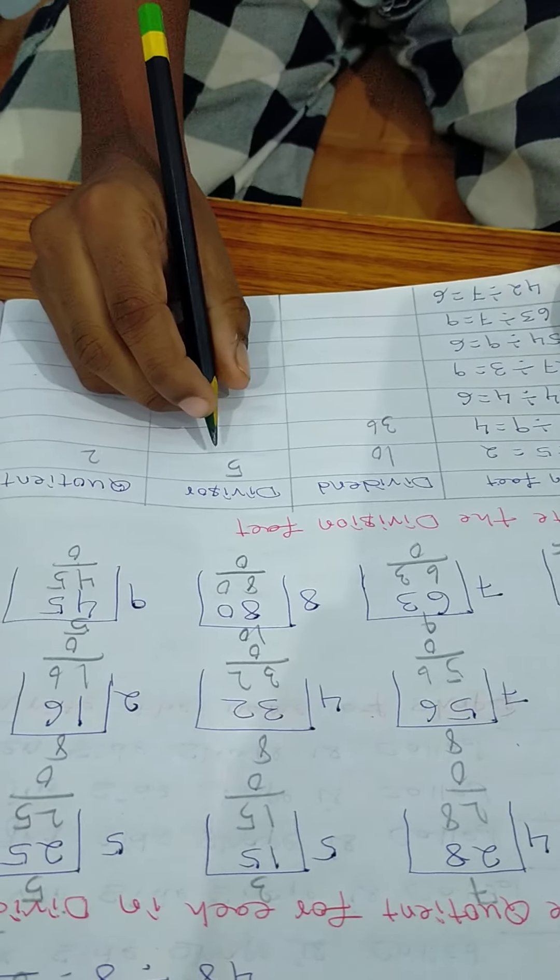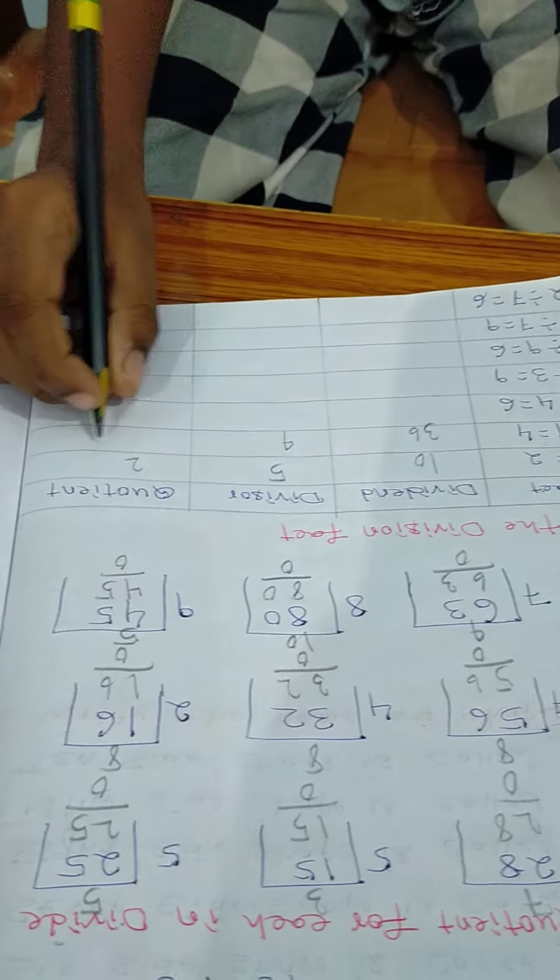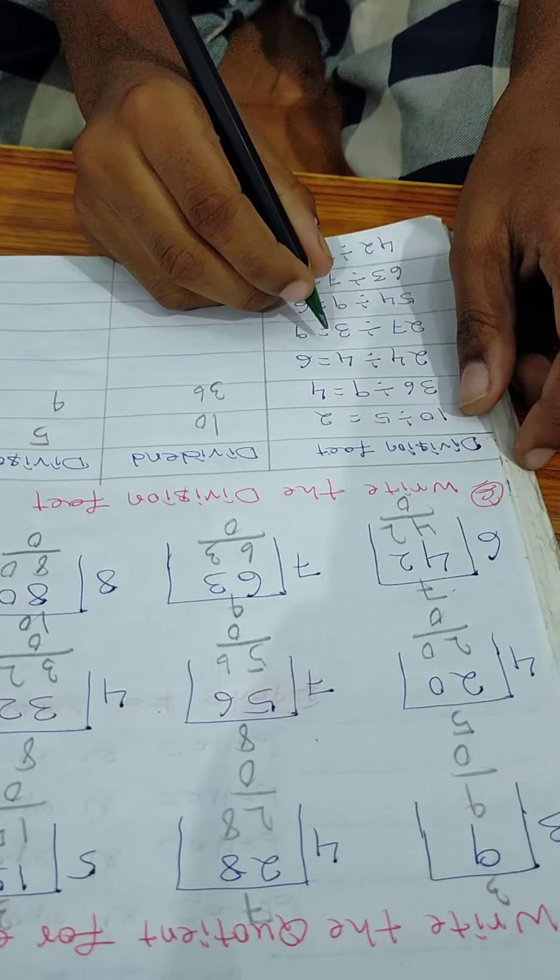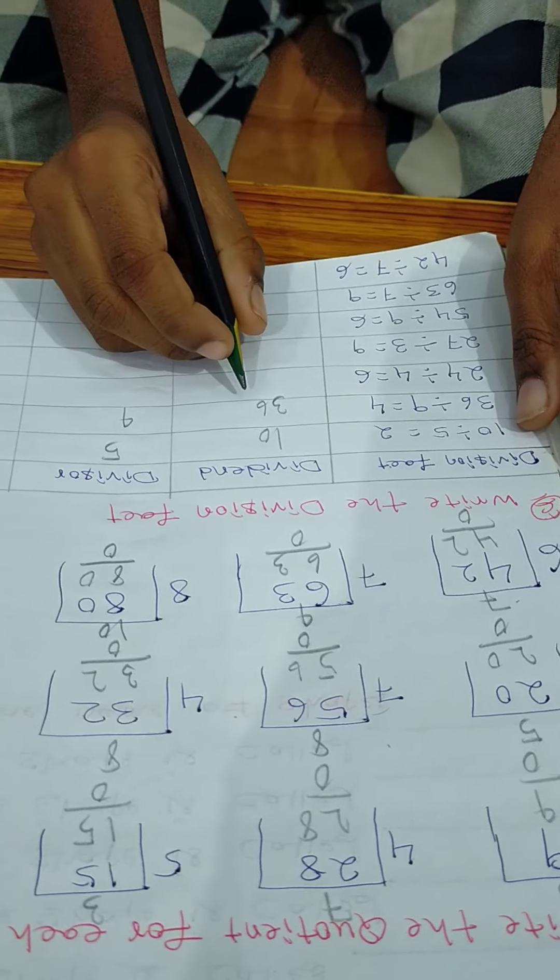36 divided 9 is equal to 4. Dividend is 36. Divisor is 9. Quotient is 4.